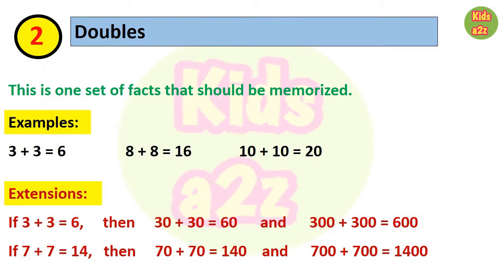Our second strategy is doubles. This is one set of facts that should be memorized. Doubles are all around us, like think of fingers and toes, that is 5 plus 5, or wheels on a car, that is 2 plus 2. We can also extend this strategy for big numbers.